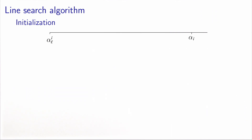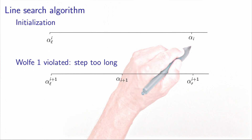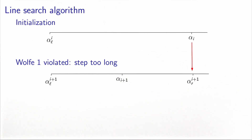The line search algorithm can be described as follows. At each iteration, we maintain three numbers: a lower bound on the left part, which is αL; an upper bound on the right part, which is αR, usually initialized with plus infinity so it's not represented on this picture; and the current candidate, which is αi. If αi violates the first Wolfe condition, it means the step is too long. Therefore, we update the upper bound αR to the previous value of αi, keeping αL the same, and the new value αi+1 is calculated as the midpoint of the interval between αL and αR.